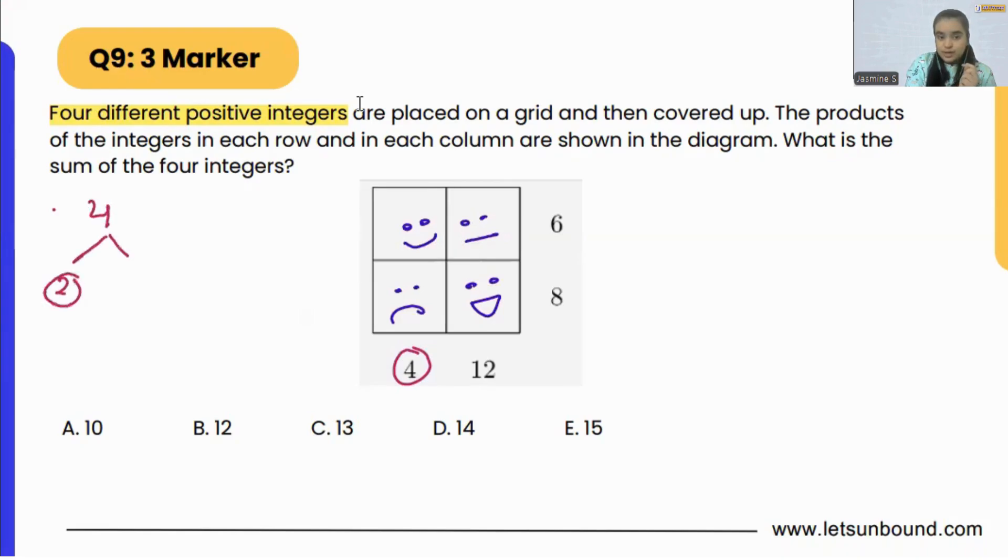We can either get two times two is four, or we can get four times one is four. Correct? No other option is there.